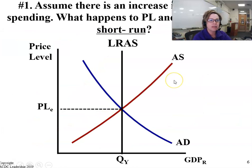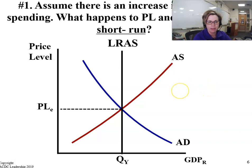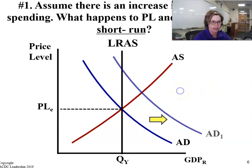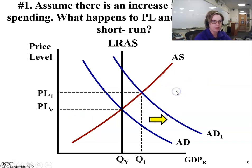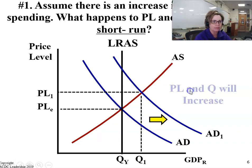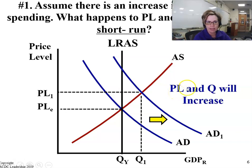Assume there is an increase in consumer spending. What happens to the price level and output in the short-run? An increase in consumer spending results in aggregate demand shifting to the right. So your price level and your quantity are both going up.